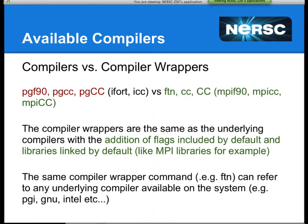The first step in building an application is usually choosing which compiler is right for you. The NERSC environment is a little different than a commodity Linux cluster at your local organization. One of the main differences, particularly on the Cray machines like Hopper and Edison, is that we have compiler wrappers that are meant to save you a lot of time and are the recommended way to compile your code instead of using the native commands directly. So for example, if you want to build with the Portland Group compilers, you might be tempted to use PGF90 or PGCC.